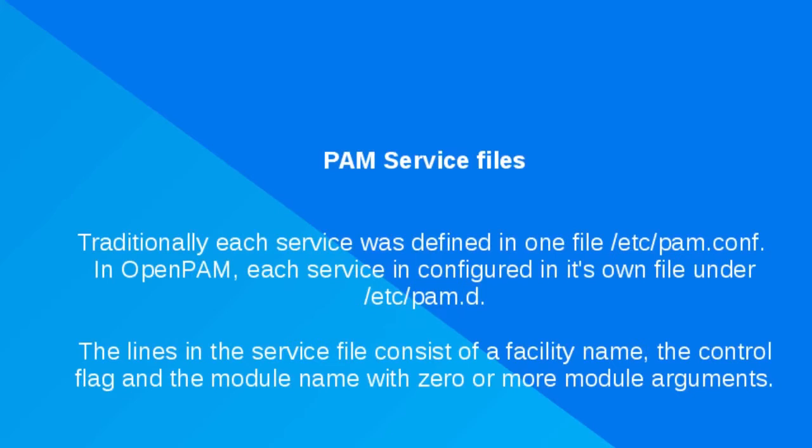Traditionally, services were defined in a single file called /etc/pam.conf. In OpenPAM, each service uses individual files in the /etc/pam.d directory. Each line in the services file contains a facility, a control flag, and a module with zero or more module arguments.